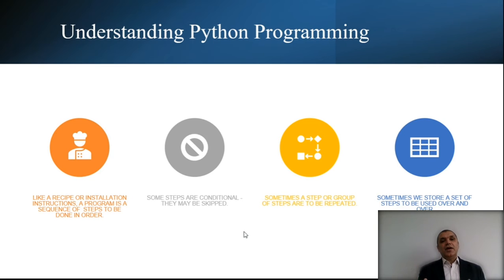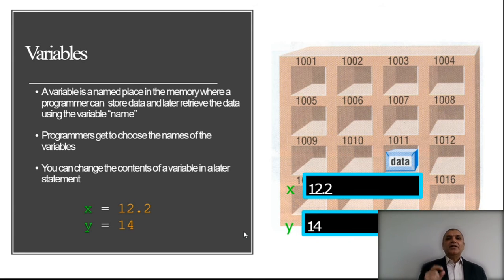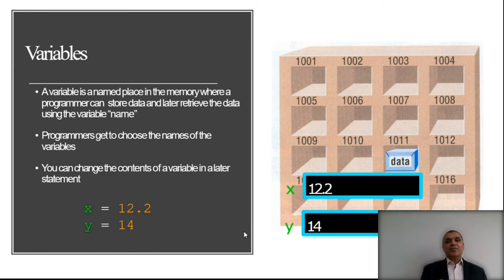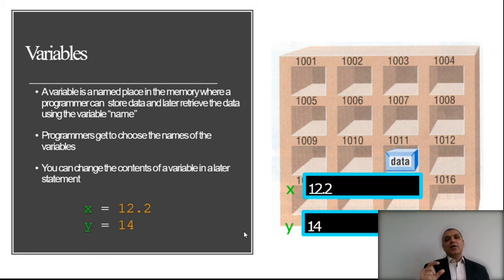The first and most important point is that whenever we store any information inside our computer while writing a program, it is stored inside memory. The memory location always contains an address which helps us refer back to, restore, or retrieve that information from that particular location. As you can see on the right side, it looks like shelves, each having a number like 1001, 1002, and so on.